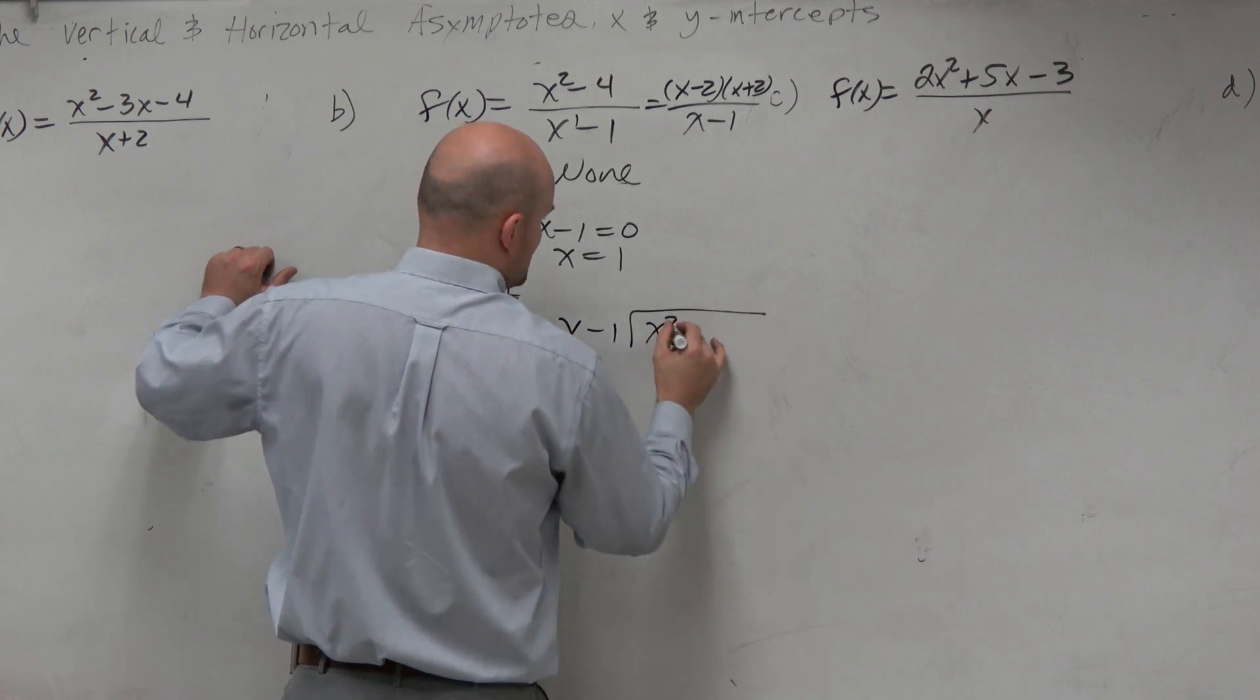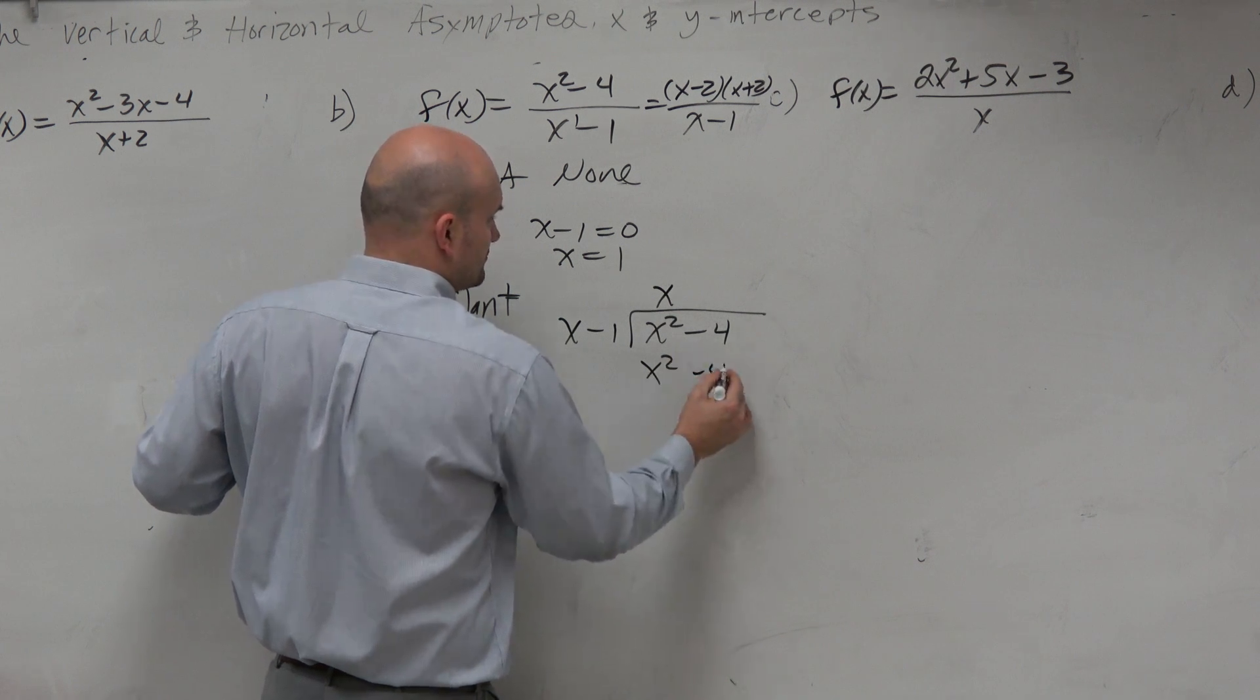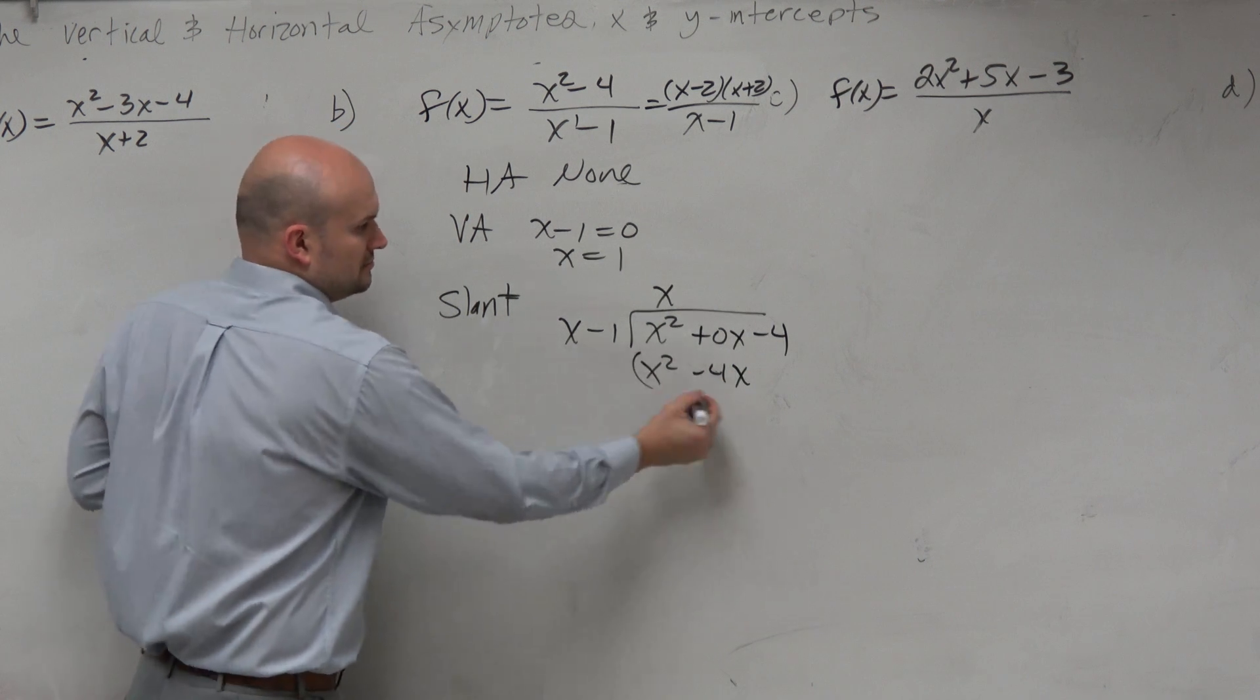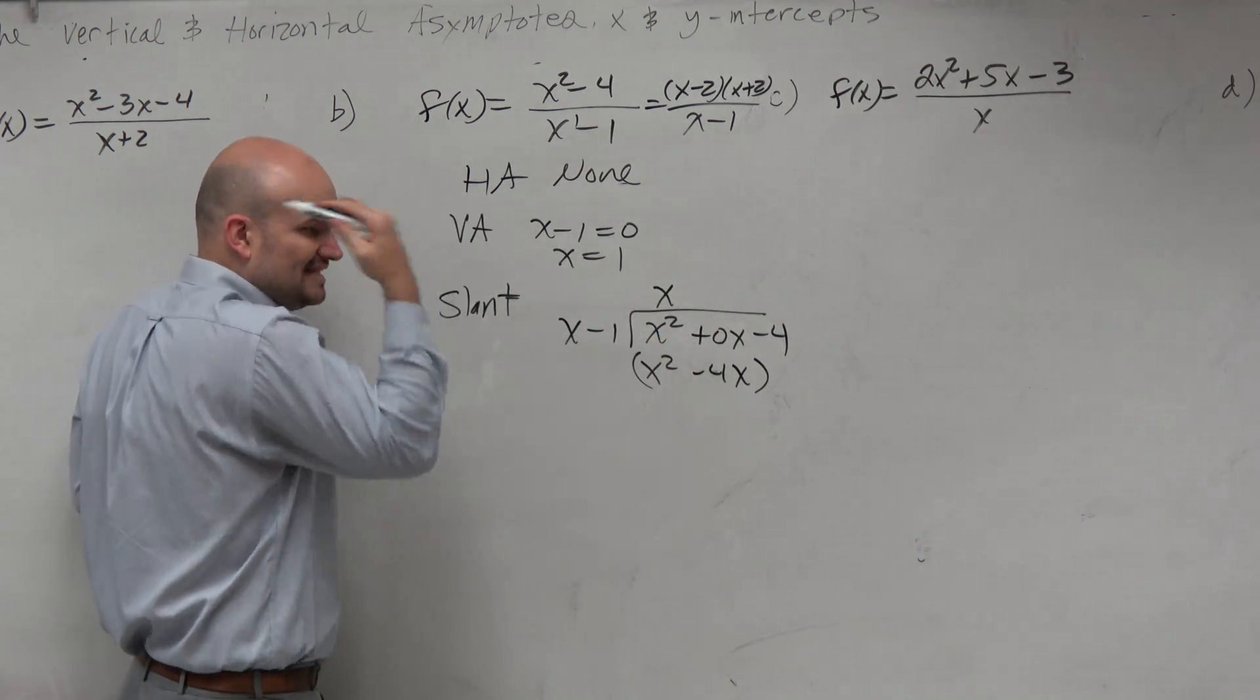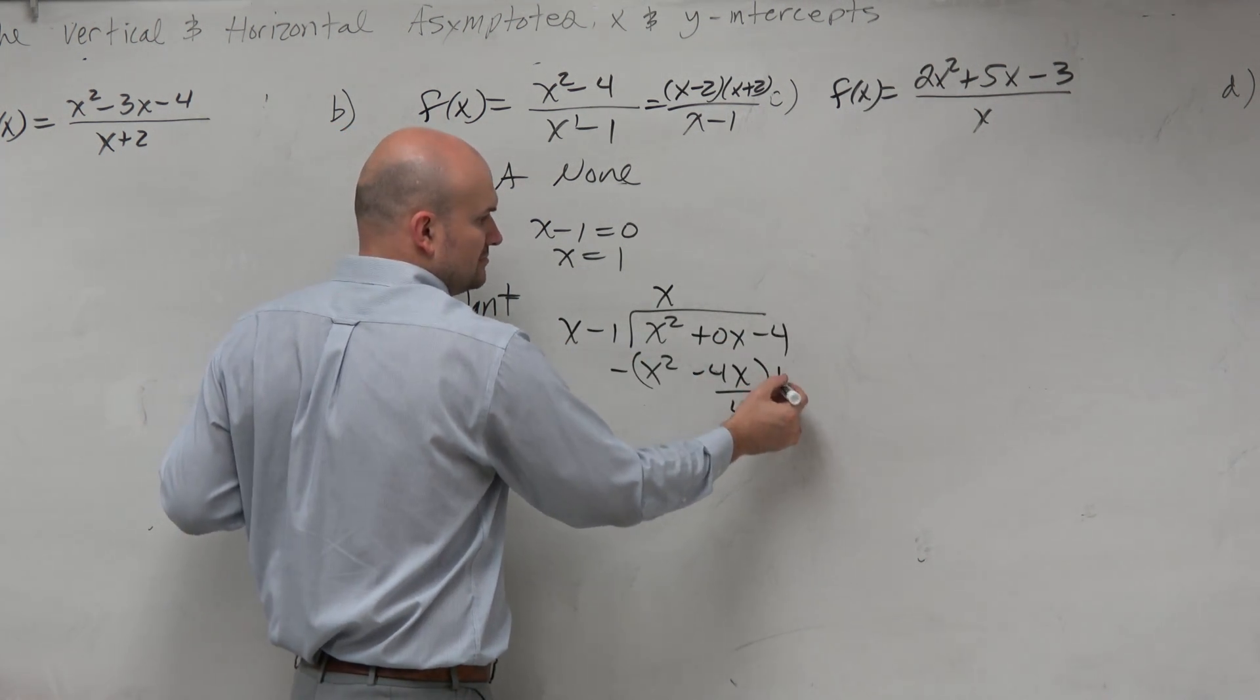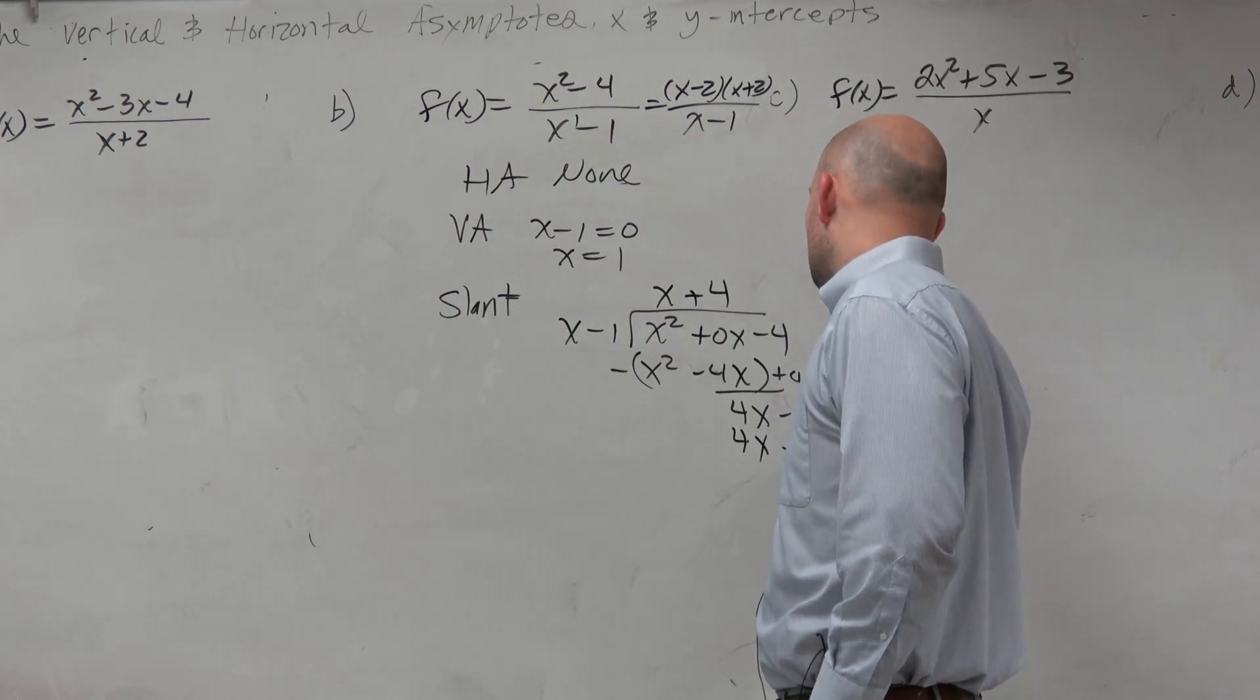x minus 1 divides into x squared minus 4. x goes into x squared x times. x times x is x squared. x times negative 1 is negative x. Now this one kind of gets confusing because we don't have a place value, so I'm going to create a place value. 4 times x is 4x. 4 times negative 1 is negative 4.